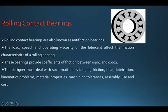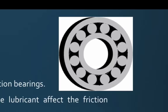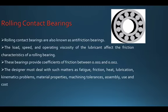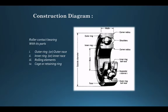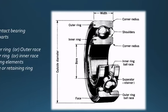The coefficient of friction for rolling contact bearings is about 0.001 to 0.002. When designing a rolling contact bearing, we deal with fatigue, friction, heat, lubrication, kinematic issues, material properties, machining tolerance, and assembly. In a rolling contact bearing, the inner ring is fixed to the shaft and rotates with it, while the outer ring is fixed. The ball or rollers allow relative movement between the inner ring and outer ring. The diameter of the inner ring bore is where the shaft is fixed.